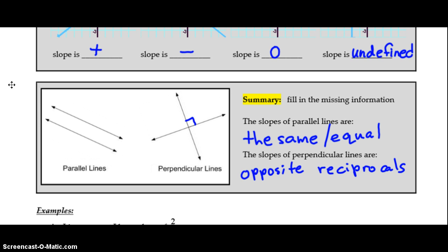Two more properties you should recall is that the slopes of parallel lines, parallel lines being two lines that will never cross each other, their slopes are always the same or equal. Whereas perpendicular lines meaning two lines that cross at a right angle or at a 90 degree angle have opposite reciprocal slopes.